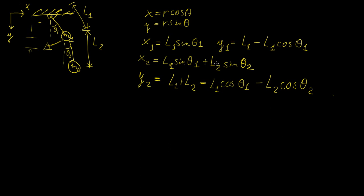For the two vertical displacements, we employ essentially the same technique as before. The potential is taken with respect to this point, so basically the total height minus the position here — that gives us the displacement in y. And then for y2 we do the same: the total length is going to be the sum of those two lengths, minus the vertical component here and the vertical component of this displacement as well.